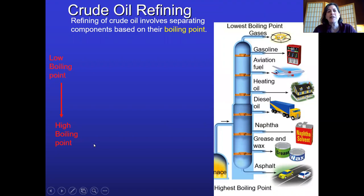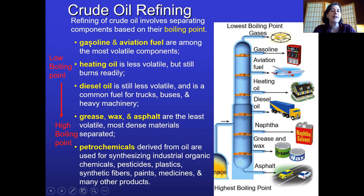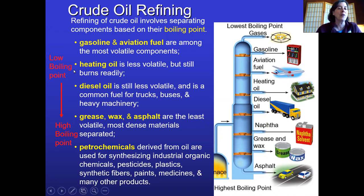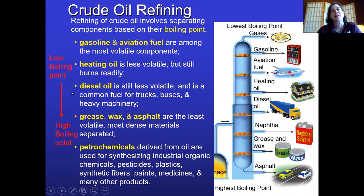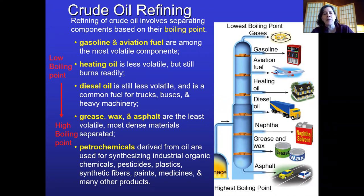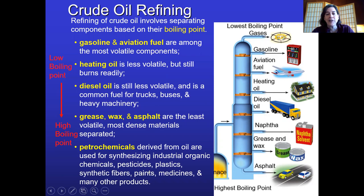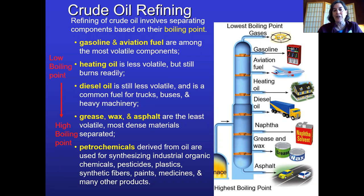Oil is broken down into different quality grades. A lower boiling point means it combusts easily — that's your highest quality stuff. Airplane fuel and gasoline have low boiling points and high quality. Heating oil is a little less volatile but still burns readily. Diesel, used by trucks and buses, is even less volatile and often dirtier — that's why you see black smoke from diesel buses and trucks. At the far end, petrochemicals like plastics don't burn easily at all and have very high boiling points, which is good because you don't want your plastic water bottles combusting.